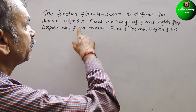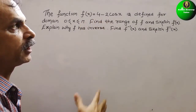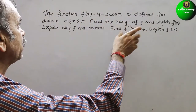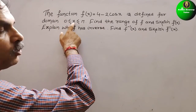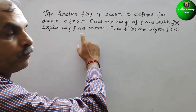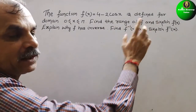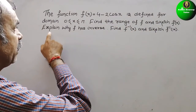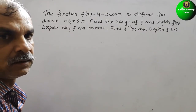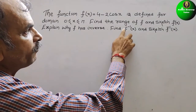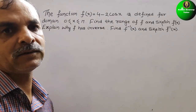The question is: the function f(x) = 4 - 2cos(x) is defined for domain 0 ≤ x ≤ π. Find the range of f and sketch f(x). Explain why f has an inverse. Find f inverse of x and sketch f inverse of x.